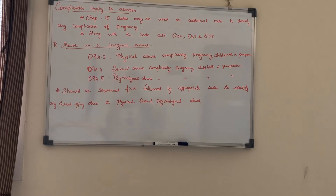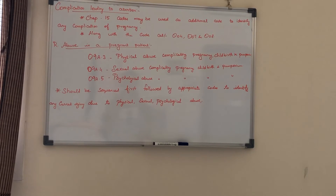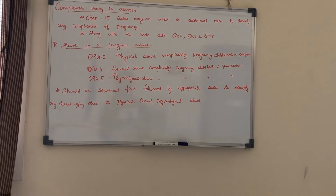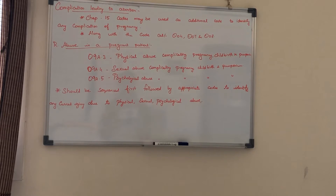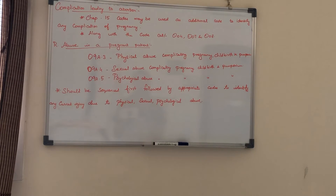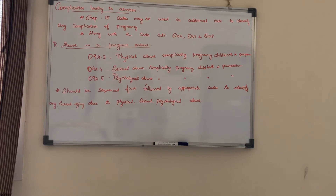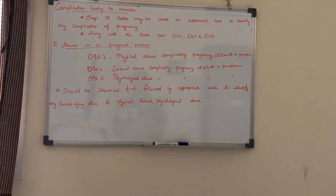The next topic is abuse in a pregnant patient. It can be either physical abuse, sexual abuse, or psychological abuse. The codes are: O98.3 for physical abuse complicating pregnancy, childbirth and puerperium; O98.4 for sexual abuse complicating pregnancy, childbirth and puerperium; and O98.5 for psychological abuse complicating pregnancy, childbirth and puerperium. Physical abuse causes injury to the body of the pregnant woman, while psychological abuse is a form of mental abuse. These codes should be sequenced first, followed by the appropriate codes to identify any current injury due to physical, sexual, or psychological abuse.